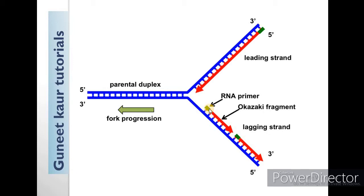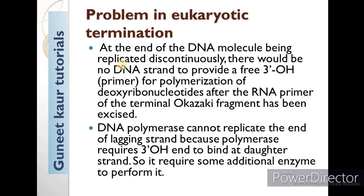So the problem arises here. At the end of the DNA molecule being replicated discontinuously — meaning the lagging strand — there would be no DNA strand to provide a free 3'OH for polymerization of deoxyribonucleotides. So there is no 3'OH end after the RNA of the terminal Okazaki fragment has been excised. DNA polymerase cannot replicate the end of the lagging strand because polymerase requires a 3'OH end to bind at the daughter strand. So it requires some additional enzyme to sort this out.